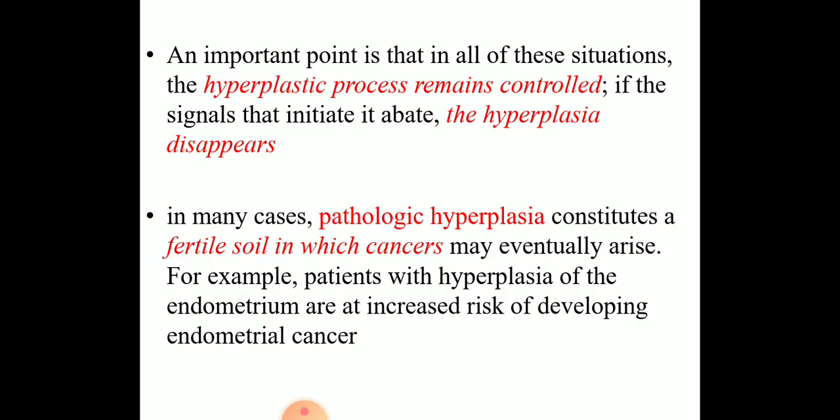An important point is that in all these situations, the hyperplastic process remains controlled — if the signal that initiates it goes away, the hyperplasia disappears. However, in many cases, pathological hyperplasia constitutes a fertile soil in which cancer may eventually arise. For example, patients with endometrial hyperplasia are at increased risk of developing endometrial cancer.